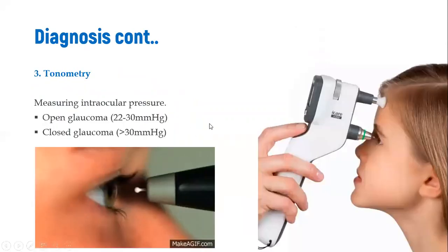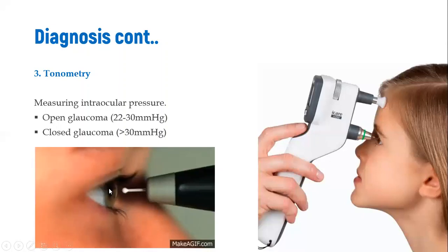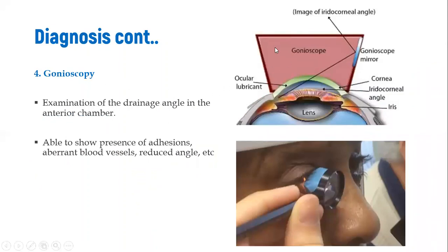Tonometry measures intraocular pressure: open angle glaucoma typically shows pressure of 22–30 mmHg, while closed angle glaucoma shows pressure above 30 mmHg. Tonometry involves a small probe that contacts the cornea and records the pressure. Gonioscopy uses a mirror at an angle to shine light and visualize the angle between the iris and the cornea, detecting aberrant blood vessels or a reduced iridocorneal angle.